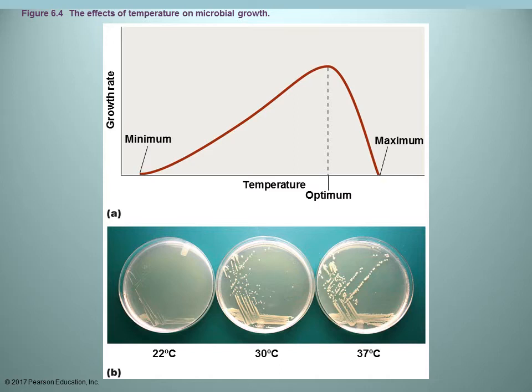There's usually a range with an optimum temperature. This graph changes depending on the organisms — for pathogens living in or on humans, you'd expect the optimum to be around 37°C. For example, a bacterium isolated from the Arctic Ocean had an optimum temperature of around 4°C (roughly 39°F). That makes sense — you look at where the organism is initially found and that gives you a clue about its temperature range.